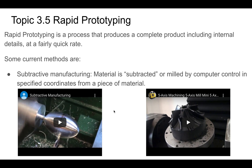A three-axis machine can move in the X, Y, and Z axes — that's what our CNC router at school can do, in the design hub. A five-axis machine allows you to also rotate, giving you additional axes as you rotate. It's pretty interesting and kind of mesmerizing to watch.